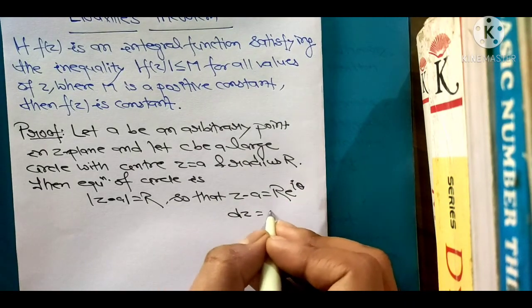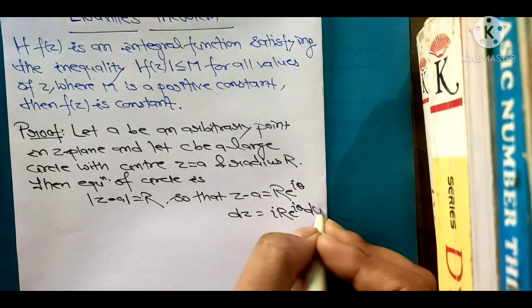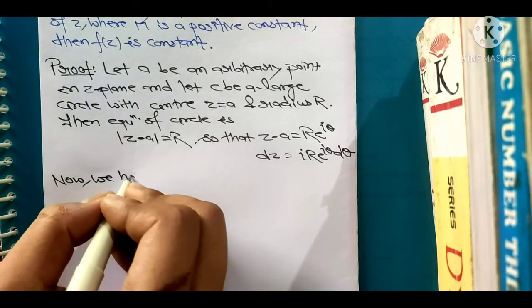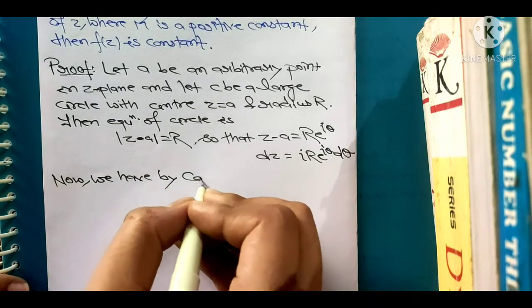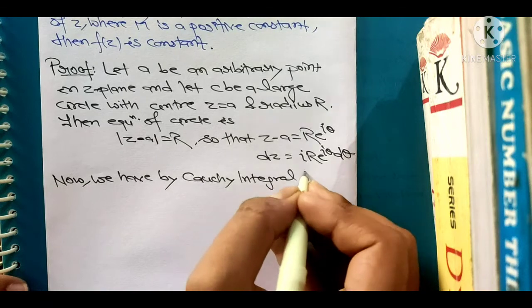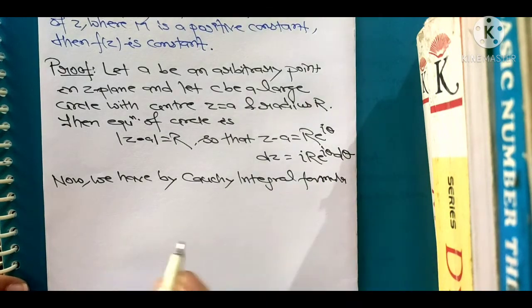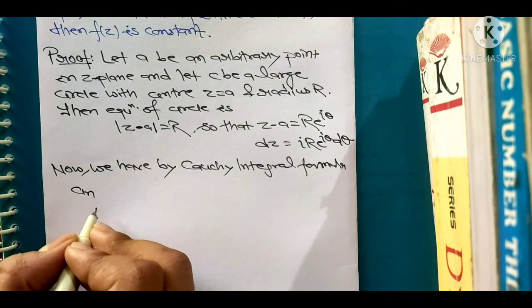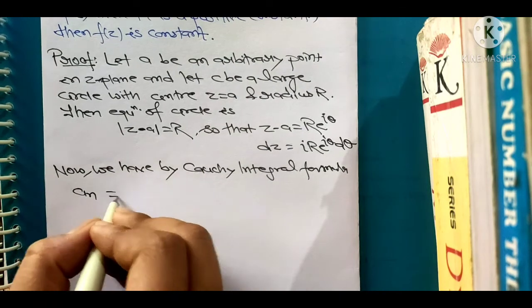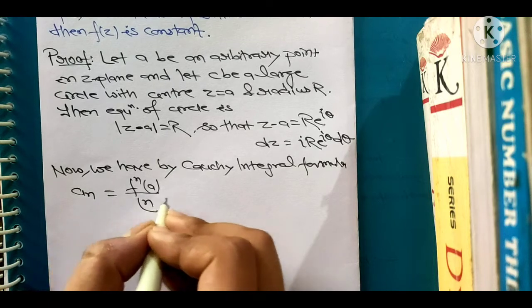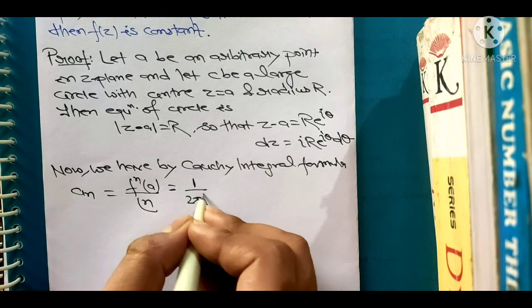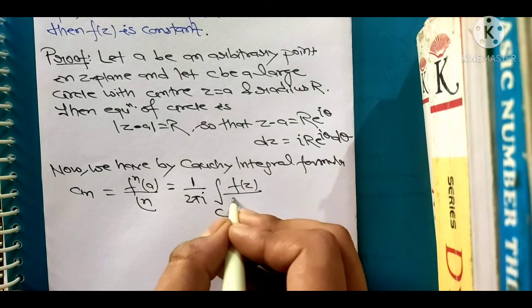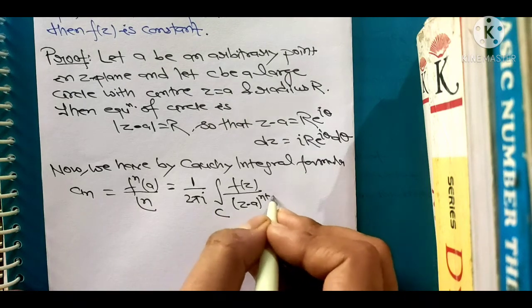If we differentiate on both sides we get i R e to the i theta d theta. Now by Cauchy integral formula, I hope you know the Cauchy integral formula for higher derivative which is: a_n equals f^(n)(a) over factorial n equals 1 upon 2 pi i integral over C of f(z) upon (z minus a) to the power n plus 1 dz.